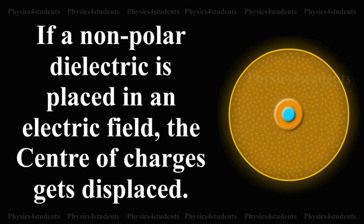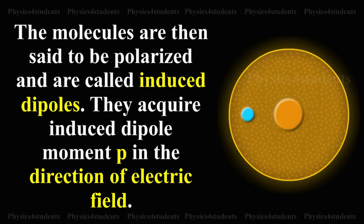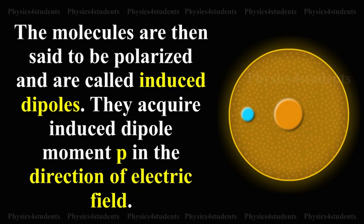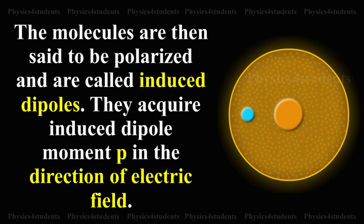If a non-polar dielectric is placed in an electric field, the center of charges get displaced. The molecules are then said to be polarized and are called induced dipoles. They acquire induced dipole moment p in the direction of electric field.